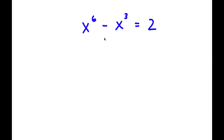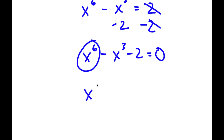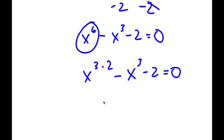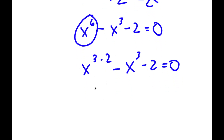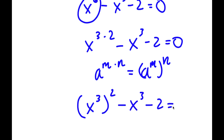In this problem, I have x to the power of 6 minus x to the power of 3 is equal to 2. To solve this, I'm going to first subtract 2 on both sides. So now I have x to the power of 6 minus x to the power of 3 minus 2 is equal to 0. Now, x to the power of 6 I'm going to rewrite as x to the power of 3 times 2. Using the exponent rule, x to the power of 3 times 2 can be rewritten as x to the power of 3 to the power of 2. So I have that minus x to the power of 3 minus 2 is equal to 0.